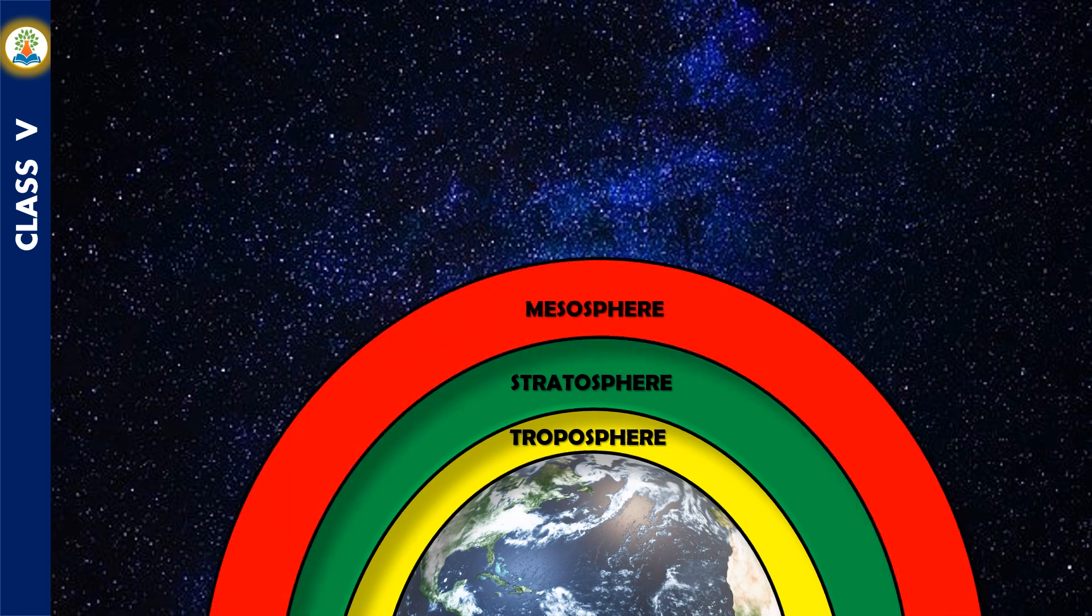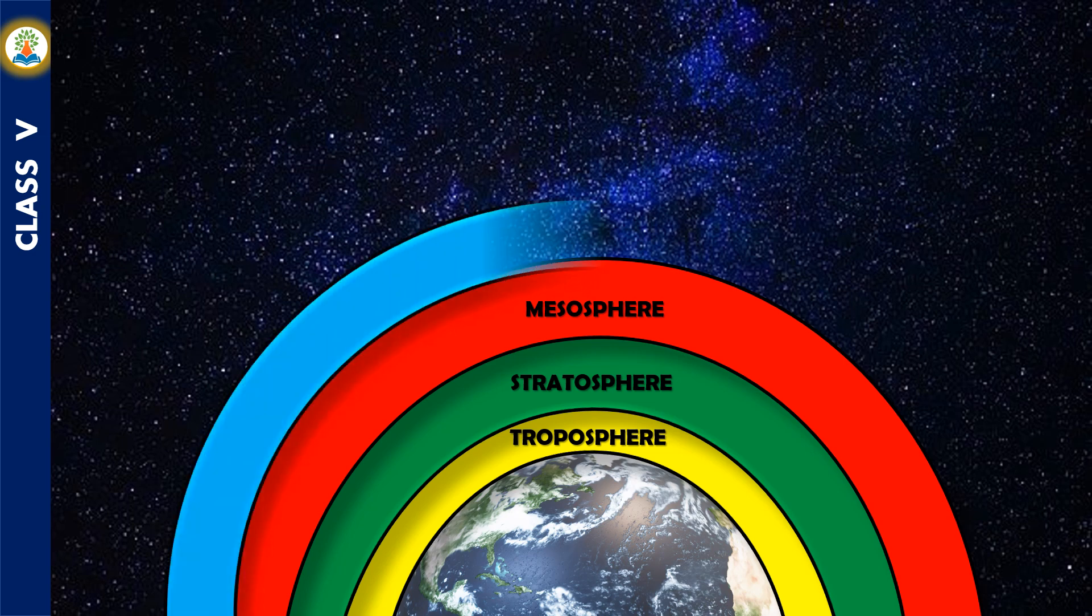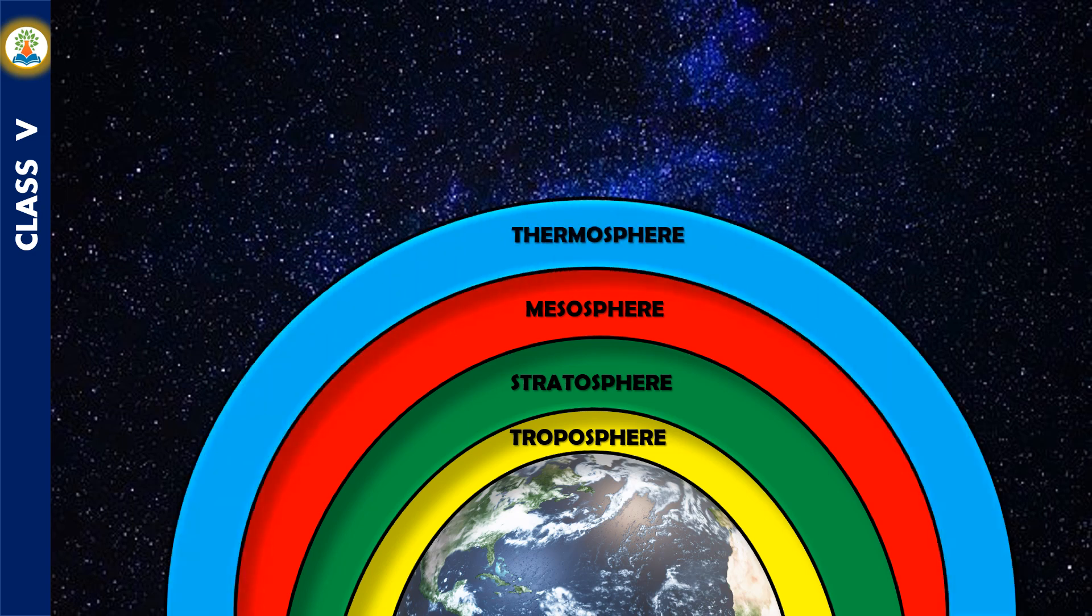The mesosphere starts at 50 kilometers above the surface of Earth and goes up to 85 kilometers. The temperature drops with altitude in this layer. Thermosphere is found above the mesopause, from 80 to 400 kilometers. Radio waves that are transmitted from the Earth are reflected by this layer. The temperature increases as the height increases.